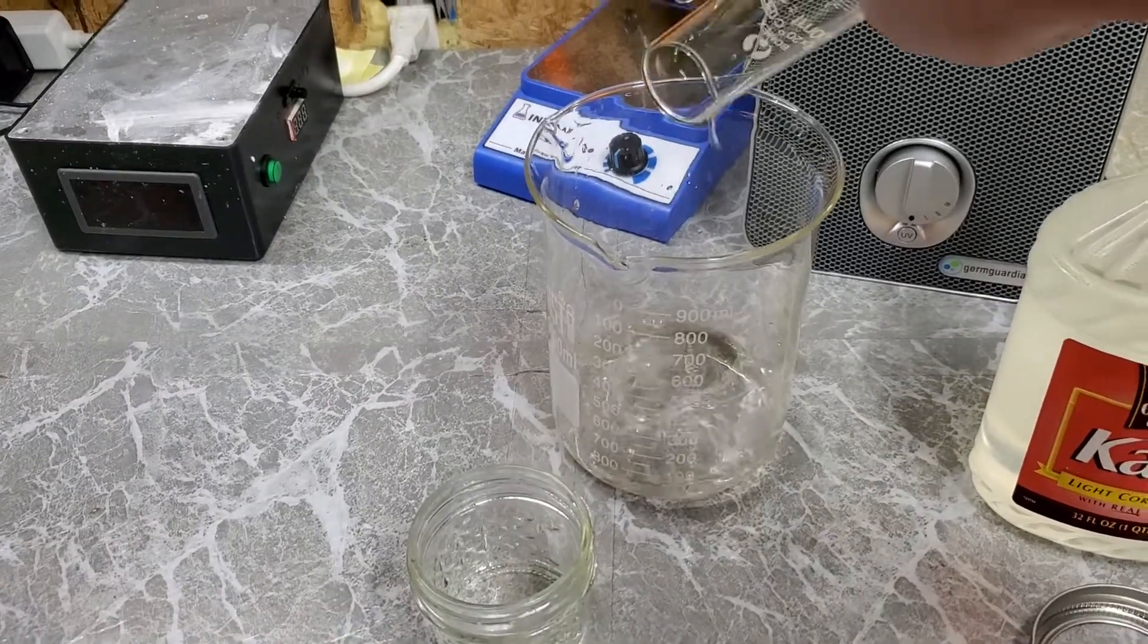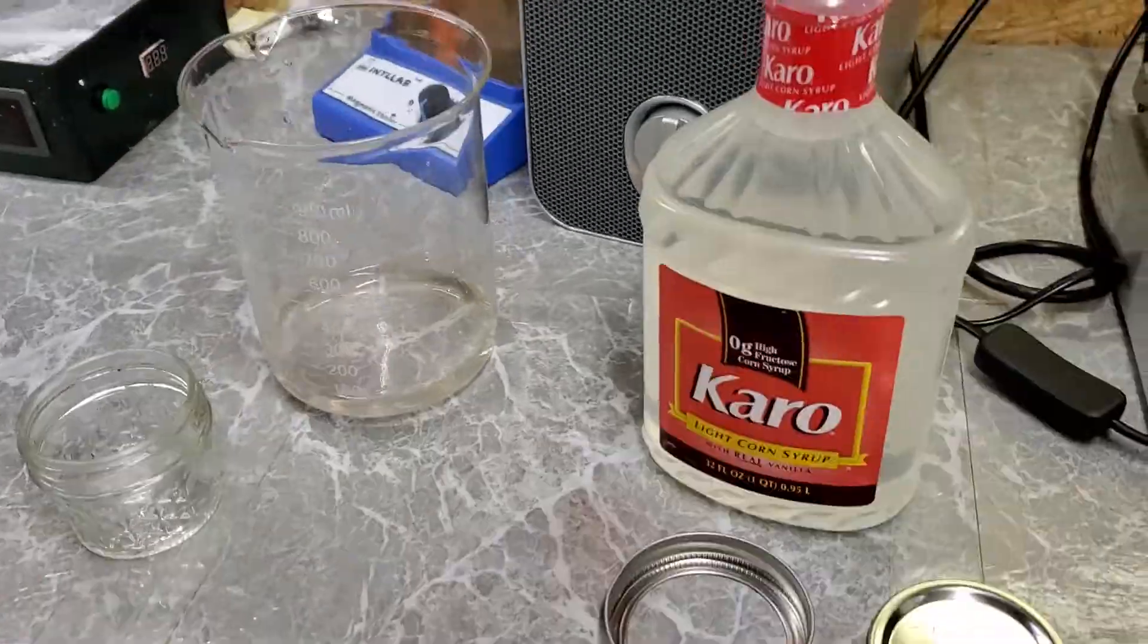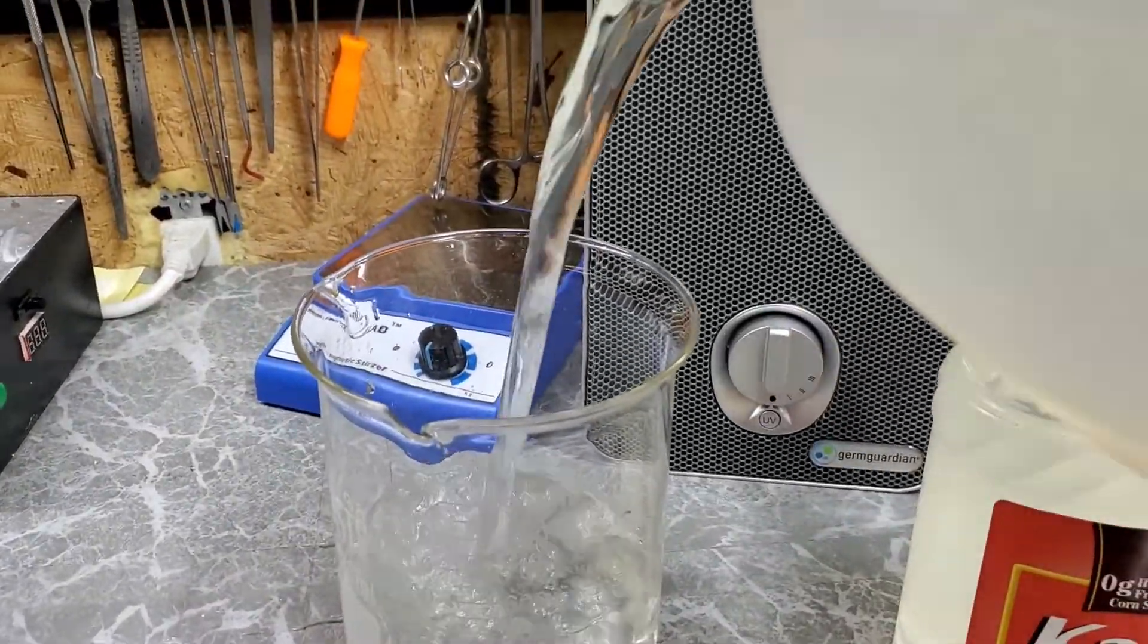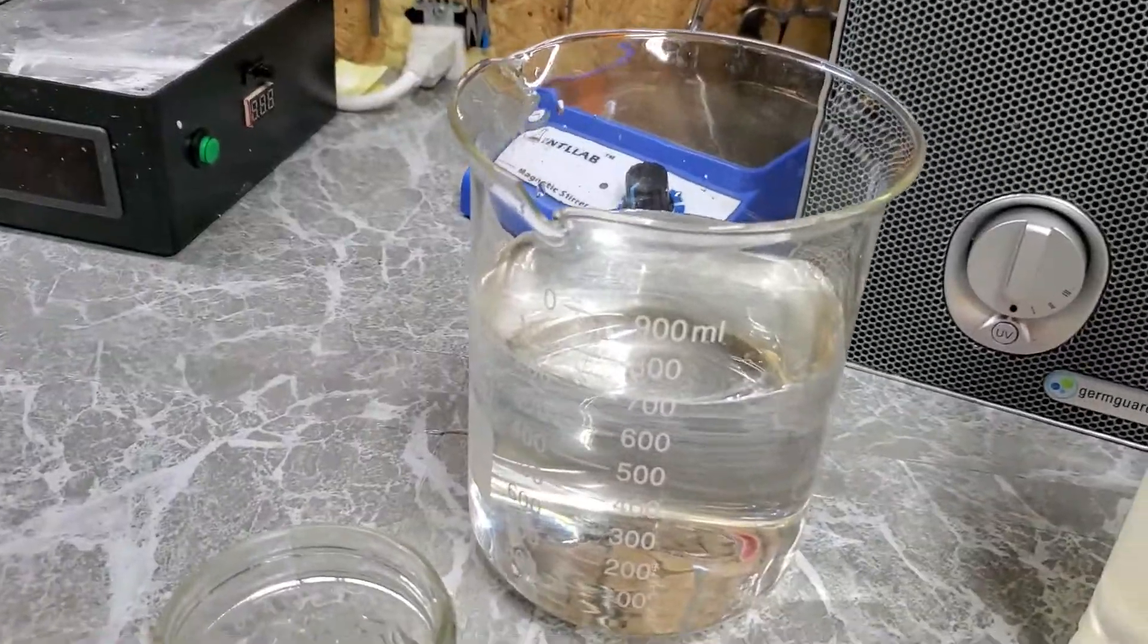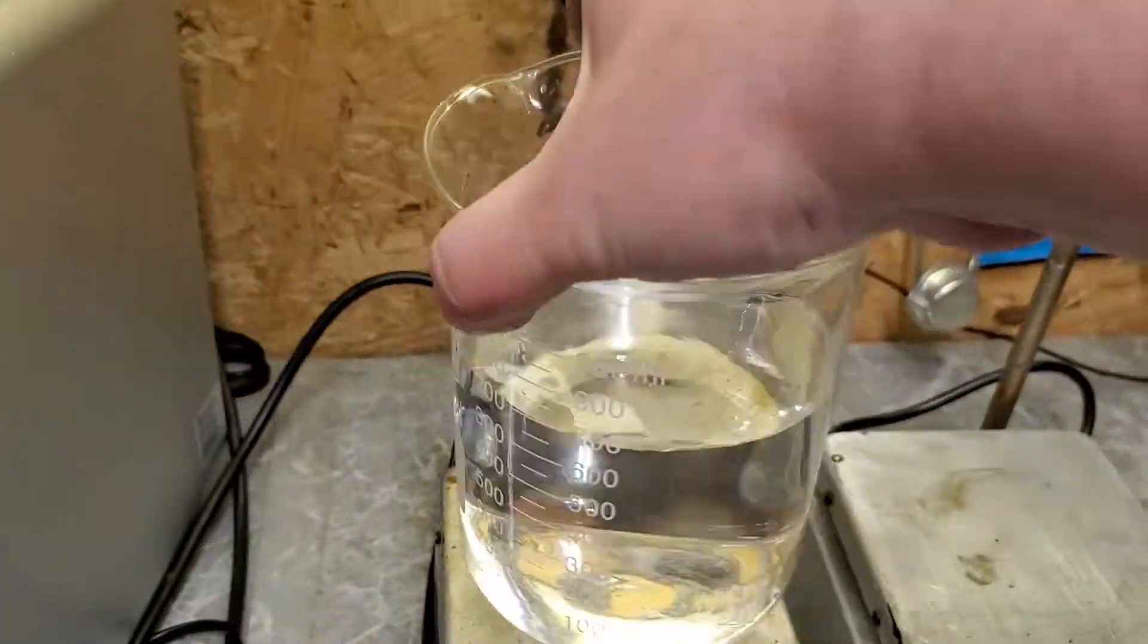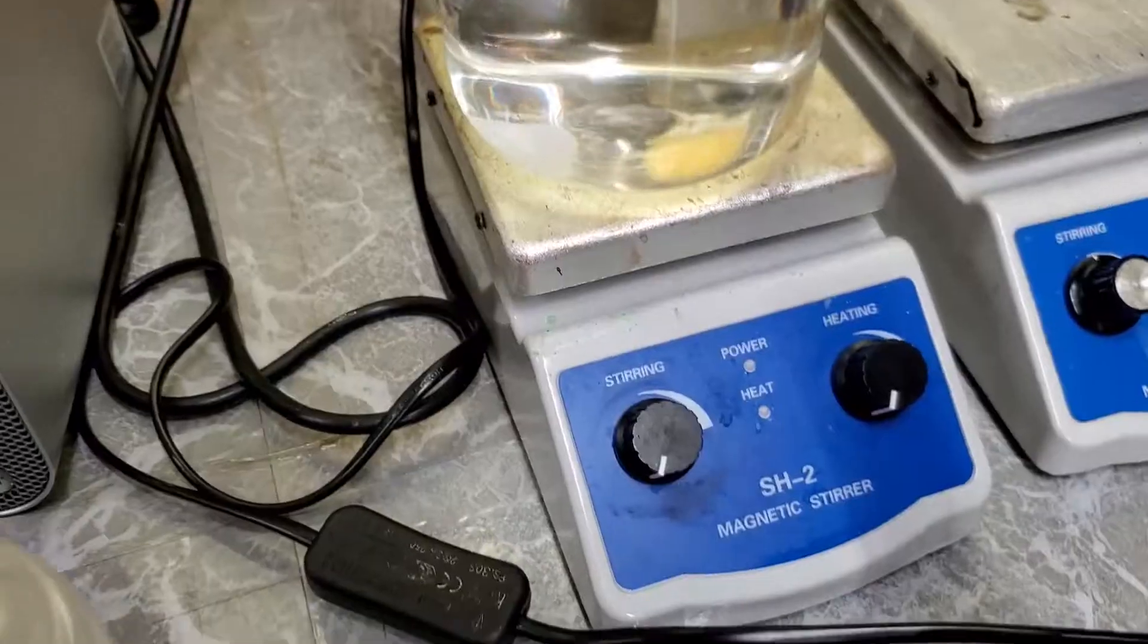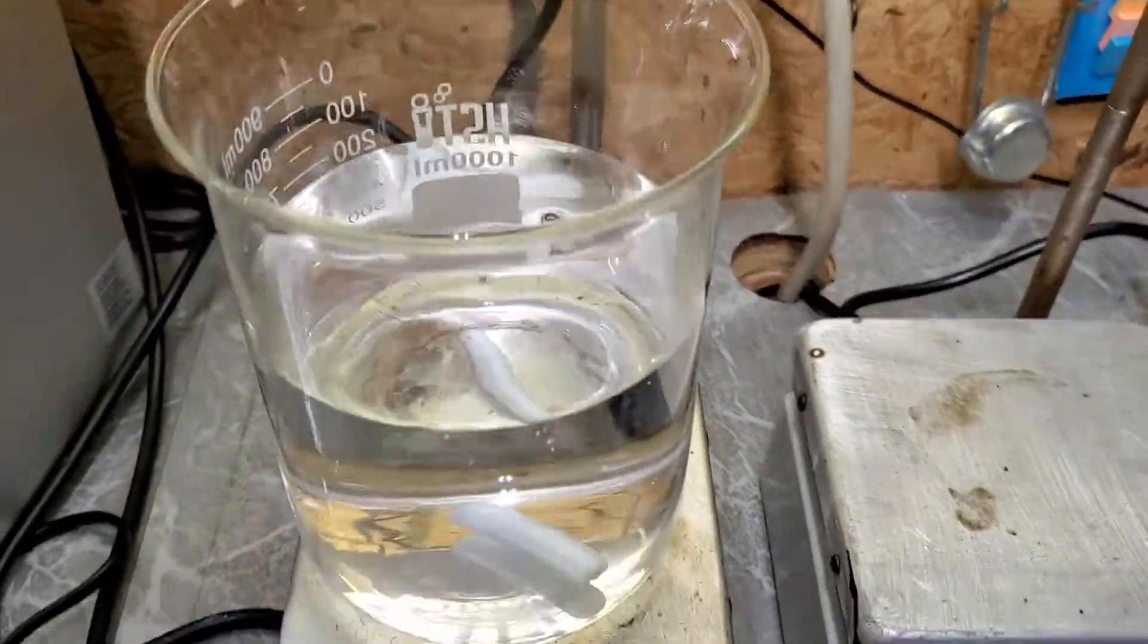Let me pour that in this beaker and get my jug of distilled water here. It may have went a little over, but that's fine. We'll go with 700 milliliters. Since we have the distilled water in our beaker, let me get a nice size stir bar here. Let me place this on the bottom there.